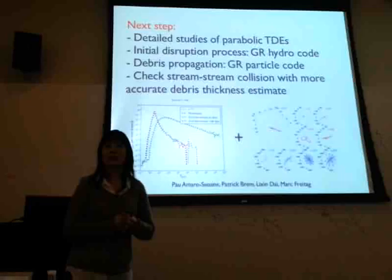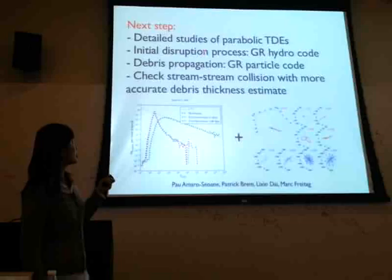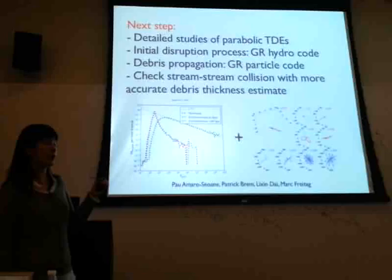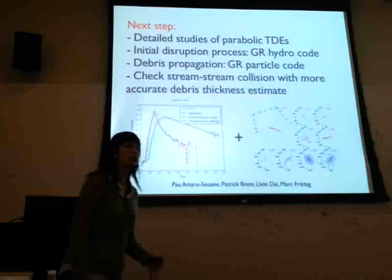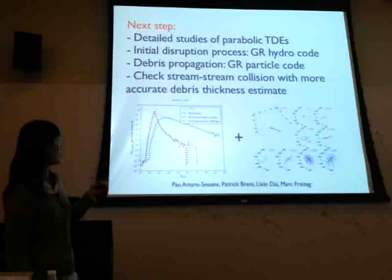The next step of our collaboration is to combine the hydro code with the GR particle code. We will simulate the initial disruption using the GADGET code, and after hydrodynamic effects stop taking charge, we will propagate the debris particles using the GR particle code, which is much faster than the hydro code. This allows us to check whether stream-stream collision will happen or not for parabolic tidal disruption events.